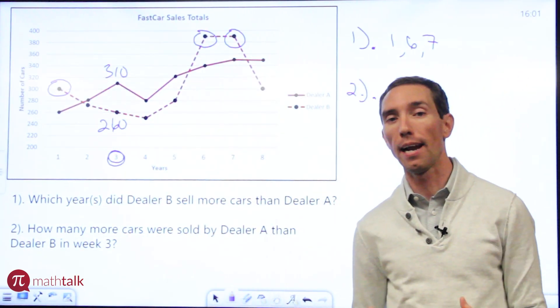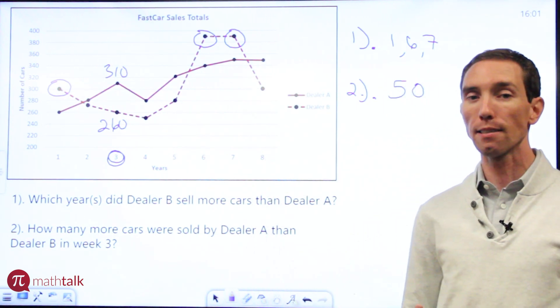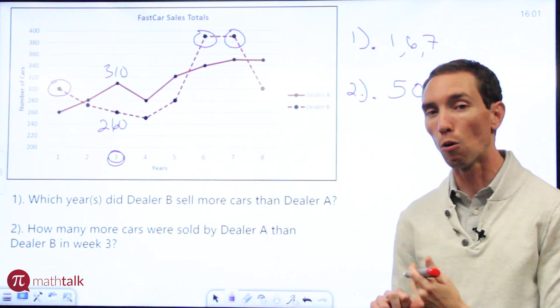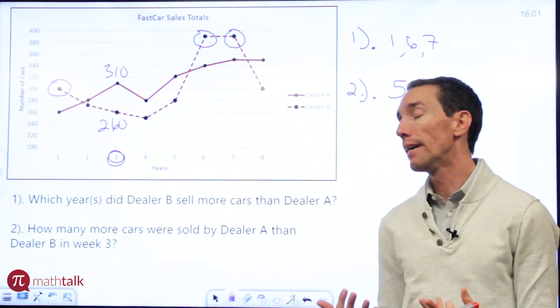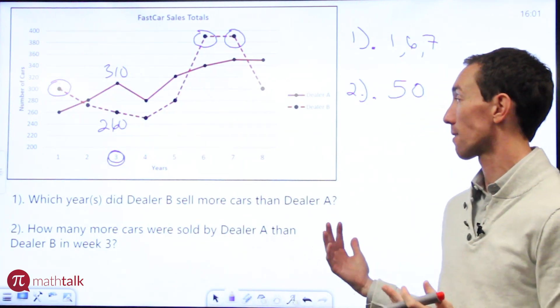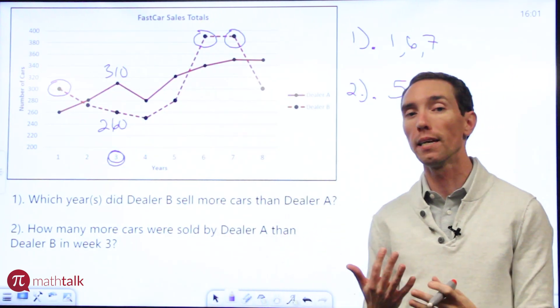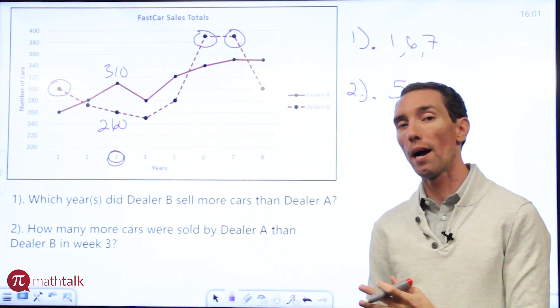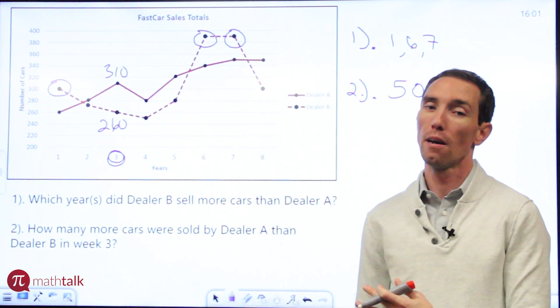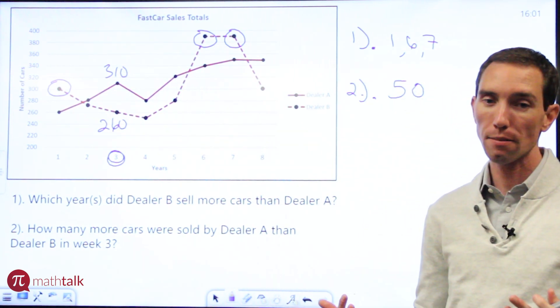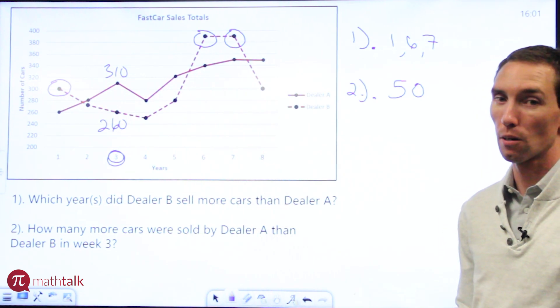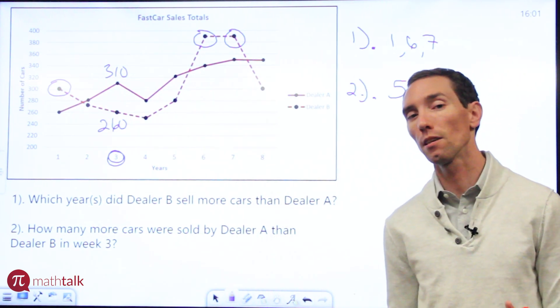So again it really helps to understand kind of how line graphs work, what the information is telling you. Keep in mind how slope will help you interpret graphs. And always look at the axis, the points on the axis, whether it's years, months, weeks, all that stuff. And then what's on the y-axis, which is your numbers. And I hope this helps as you get to line graphs. Make sure to check out our next video and we're going to look at circle graphs or pie graphs. Thanks for watching.